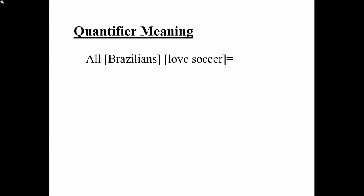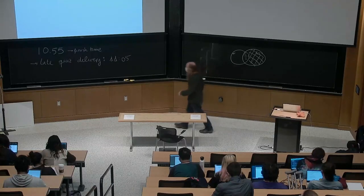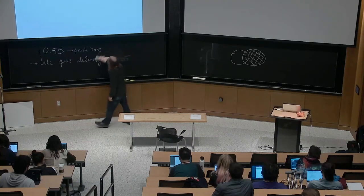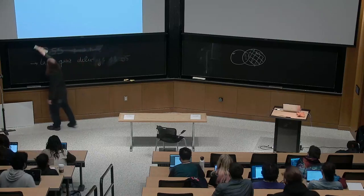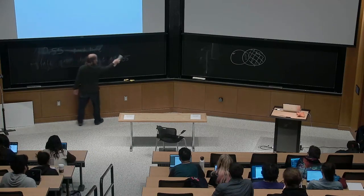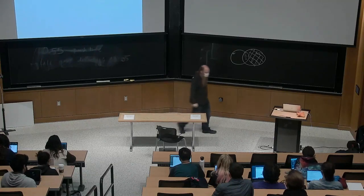I've just made up a non-conservative quantifier called Glorp. It says if you add up all things in set number one and set number two — the union of the two sets has cardinality three. 'Glorp circles are red' would be true in a picture where there are two circles and one red thing, total three. But there is no quantifier Glorp, not in English and not in any language on Earth as far as we can tell. Quantifiers don't ever do this kind of thing — this would be a non-conservative quantifier, and there aren't any.